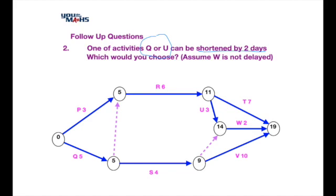Now let's see what happens if we reduce activity U by two days instead — making it one day. The node after U would drop to eleven plus one equals twelve. That only affects the W pathway: two plus twelve is fourteen. But the T and V totals are unchanged, so the minimum completion time remains 19 days. Shortening U has no effect on the overall completion time.